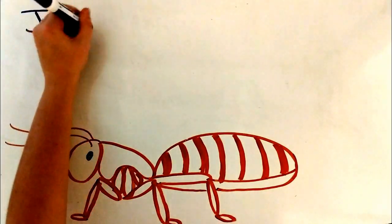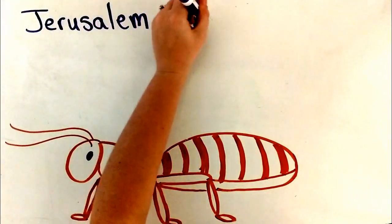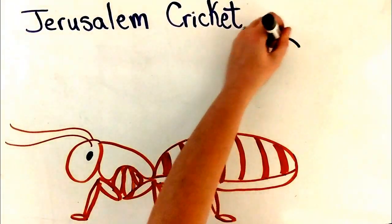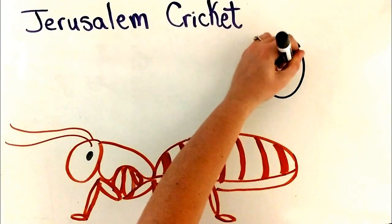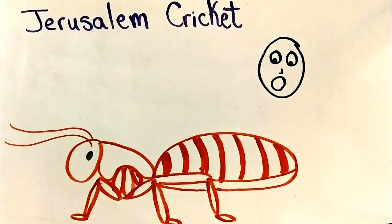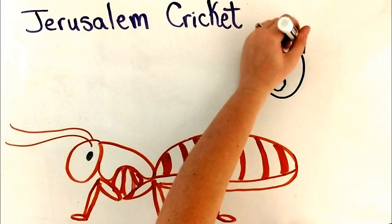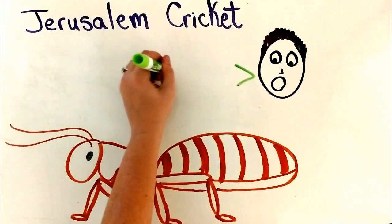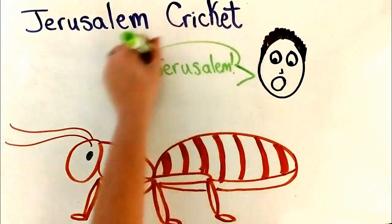Let's get back to their common name, Jerusalem cricket. Why would Jerusalem be a part of their name if they are from the US, Mexico, and Central America? There are many thoughts on this and no one really knows for sure, but some people believe that the name comes from the 19th century when Jerusalem was an expletive. It would make sense that when someone saw this insect alive and well, they would be startled and yell, Jerusalem!